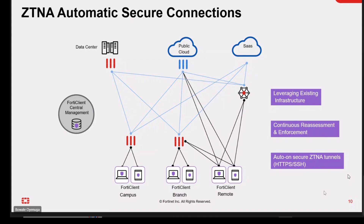Users are authenticated and authorized in the customer's or organization's environment, which helps prevent unauthorized access even if a user's credentials are compromised. The second feature is secure tunnels — all traffic between the user and the application is encrypted, providing a secure connection between the remote user and the server or application. Policies are managed centrally, making it easy to enforce security policies across the organization.